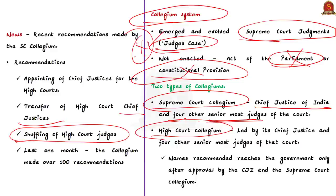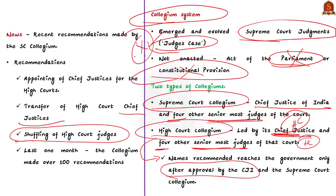Moving on to the High Court Collegium — it is led by the Chief Justice of the High Court. In addition to the Chief Justice of the High Court, it consists of four other senior-most judges of that particular High Court. The main difference between the Supreme Court Collegium and High Court Collegium is the composition. The recommendation of the High Court Collegium reaches the government only after getting approved by the Chief Justice of India and the Supreme Court Collegium.